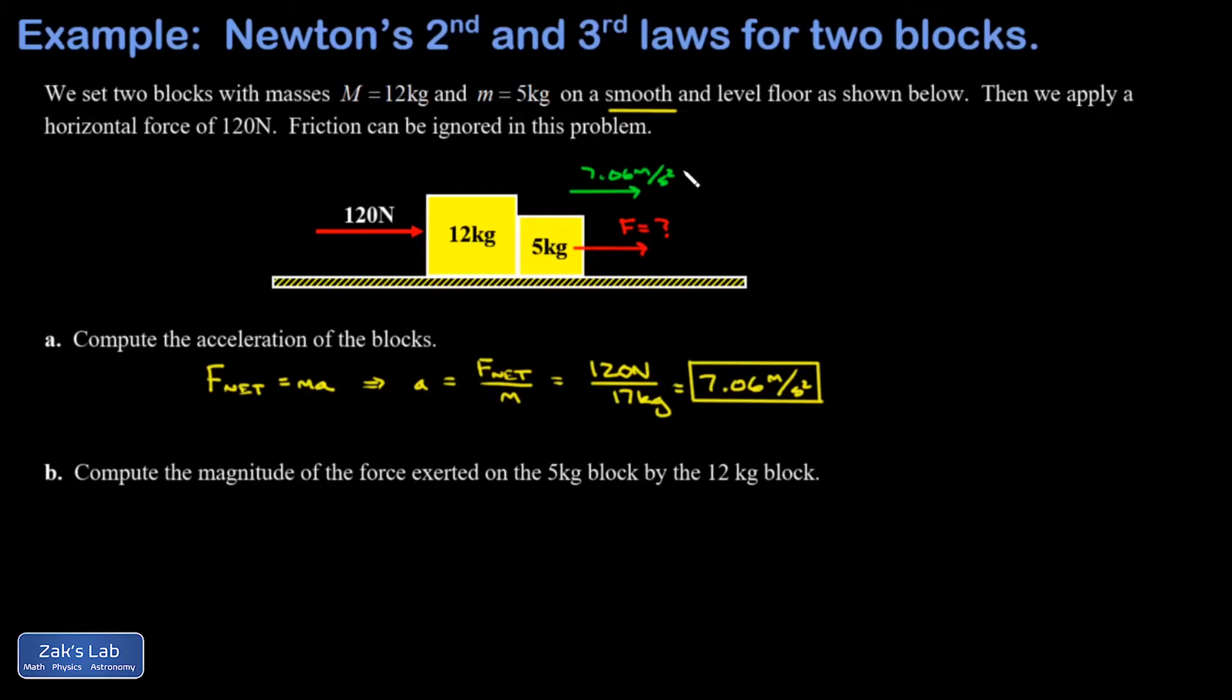So this time I know the acceleration and I know the mass, and I should be able to infer the force. So that's 5 kilograms times 7.06 meters per second squared. And it turns out to be 35.3 newtons.